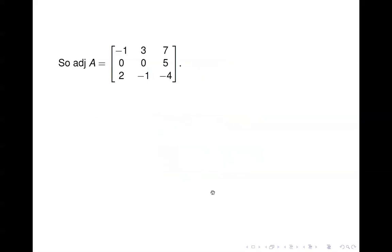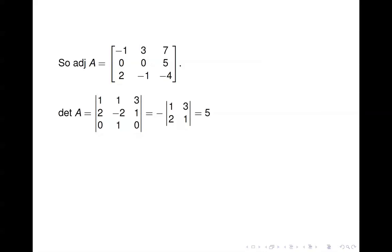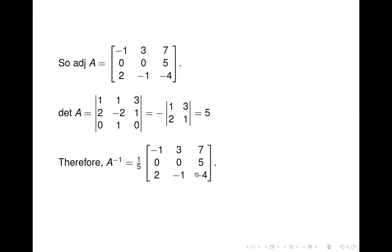Putting it all together, we get the adjoint matrix, and we compute the determinant of A, which is 5. So the inverse of A is 1/5 times the adjoint of A, giving us the final inverse matrix — computed entirely using determinants, with no elementary row operations.